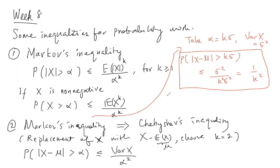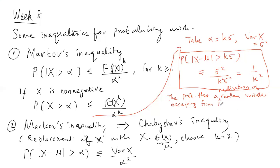In layman's terms, Chebyshev's inequality says that the probability that a realization of a random variable escapes from mu by more than k standard deviations is bounded by 1 over k squared. Let's look at some examples.